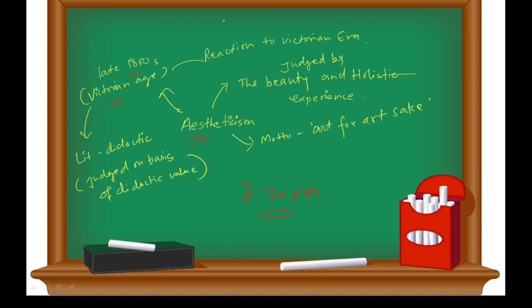If we talk about aestheticism, it was a reaction to Victorian era works - poetry, novels, and other things. What was the ideal of Victorian literature? It was didactic. The work was judged on the basis of didactic values. If a work had didactic value, it was good. If it didn't have didactic value, it was not a good work according to Victorians.